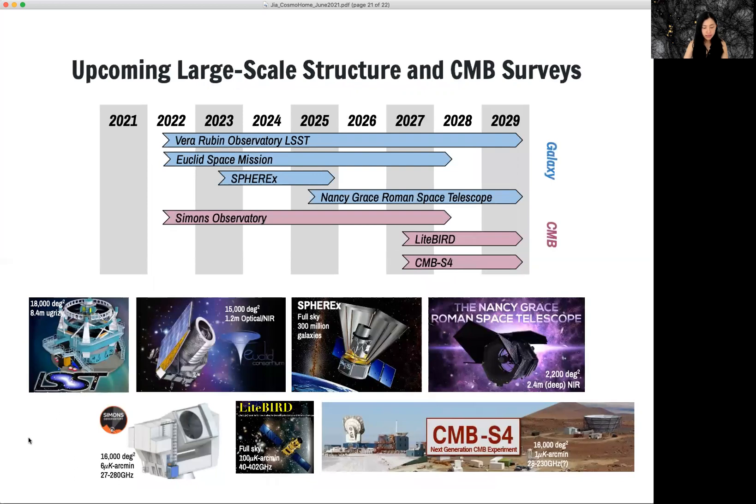Luckily, in the next decade, we're seeing many large cosmological surveys, including both Galaxy and the CNB surveys, such as Vera Rubin Observatory LSST, Euclid Sphere X,